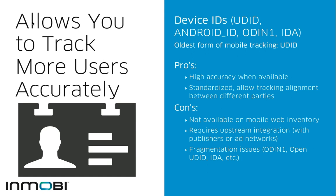One of the big problems with device IDs is that they are not available on mobile web — they are only available in applications. This means you're blind to half of your inventory, since every click happening in a web browser will not be trackable using this technology. You also need very tight integrations with your publishers and app developers so that they pass you those device IDs at click time.